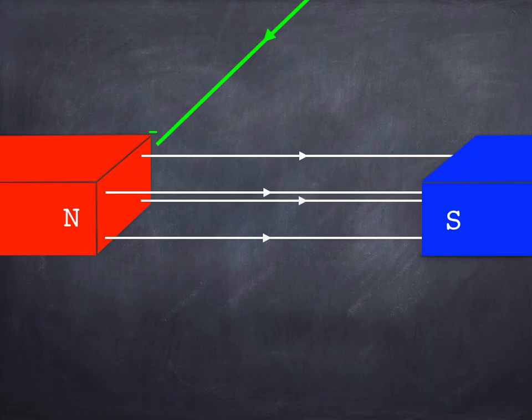Now this effect is really important. We use it in loads of different devices. It's called the motor effect. But how did I know that the wire was going to move upwards? Why not down or to the right? Well to work out and predict the direction we use something called Fleming's left hand rule.